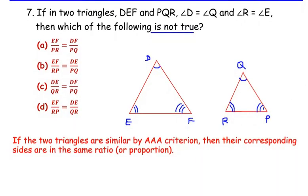So here we can write that side DE is proportional to side QR, which equals DF proportional to PQ, which equals EF proportional to PR. This is how it should look.